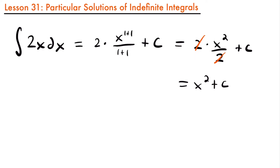This is what we call the general solution for an indefinite integral. We call it the general solution because it represents a ton of different possibilities of what the answer to this integral could be. When you're taking the integral of a function, you're trying to find a function whose derivative is inside this integral. Because if you took the derivative of x squared, you would multiply your exponent down and subtract 1 from the exponent to be left with 2x.